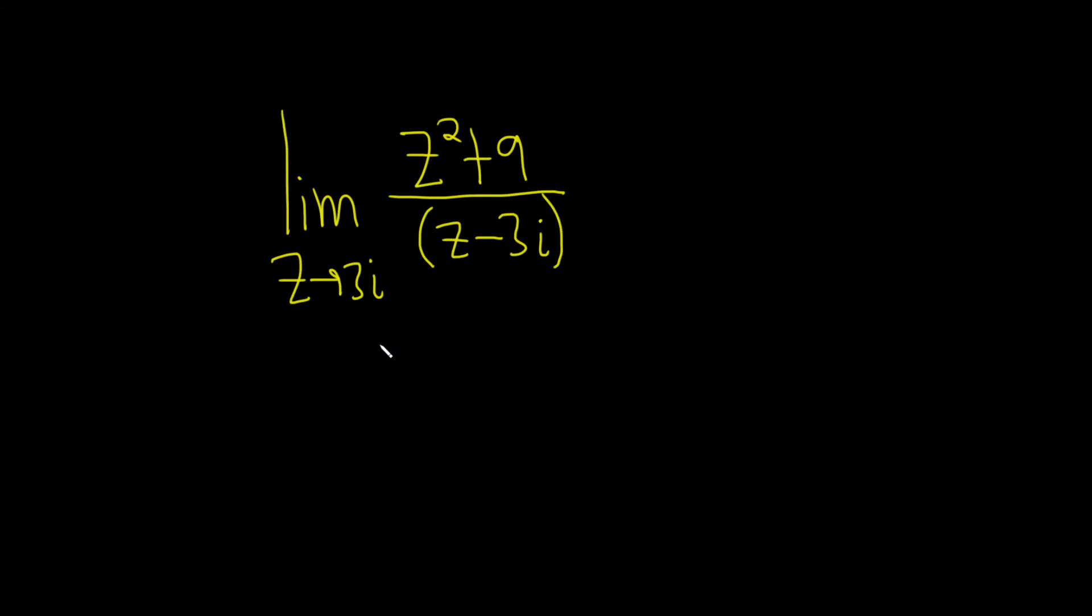So the rule is, whenever you're taking limits, you should always just try to plug the number in. So if we do that in this case, we see right away that it doesn't work because we end up getting 0 on the bottom.